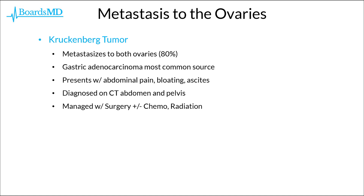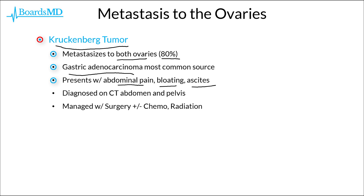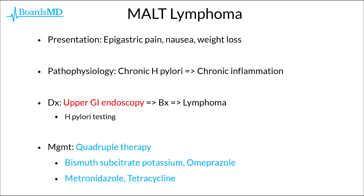One classic example of metastasis from gastric adenocarcinoma is metastasis to the ovaries, which is termed a Krukenberg tumor. A Krukenberg tumor generally metastasizes to both ovaries and is bilateral in 80% of cases. The most common source is gastric adenocarcinoma, and it classically presents with abdominal pain, bloating, and even ascites, similarly to other ovarian cancers. The Krukenberg tumor can be diagnosed on CT of the abdomen and pelvis, and management is a combination of surgery, chemotherapy, and radiation.